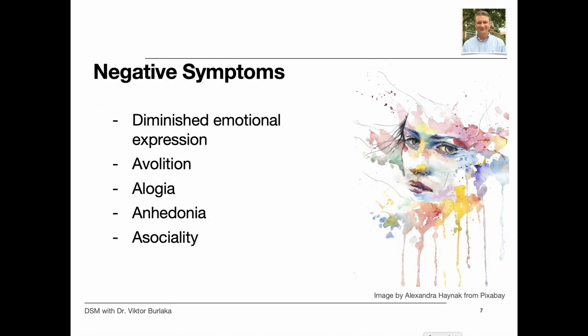Negative symptoms account for a substantial portion of the morbidity associated with schizophrenia, but are less prominent in other psychotic disorders. Two negative symptoms are particularly prominent in schizophrenia: diminished emotional expression and avolition. Diminished emotional expression includes reductions in the expression of emotions in the face, eye contact, and intonation of speech, as well as a reduction in movements of the hand, head, and face that normally give emotional emphasis to speech.